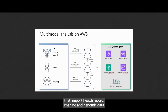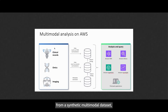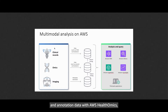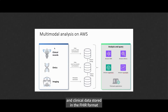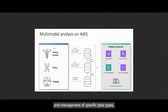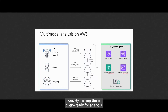First, import health record, imaging, and genomic data from a synthetic multimodal data set — in this case, Cynthia. Healthcare users can import genomic variant and annotation data with AWS Health Omics, imaging data with AWS Health Imaging, and clinical data stored in the FHIR format with AWS Health Lake. These purpose-built services simplify the ingestion and management of specific data types, quickly making them query-ready for analysis.